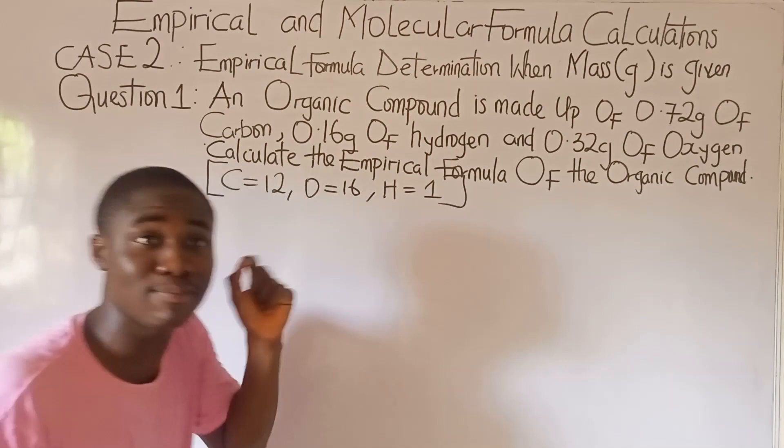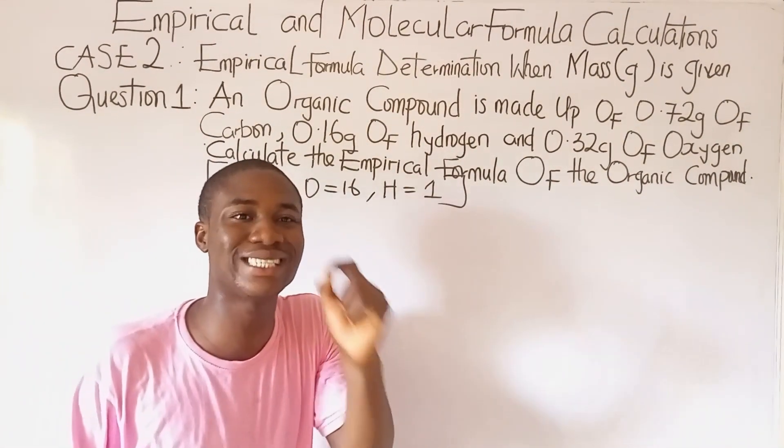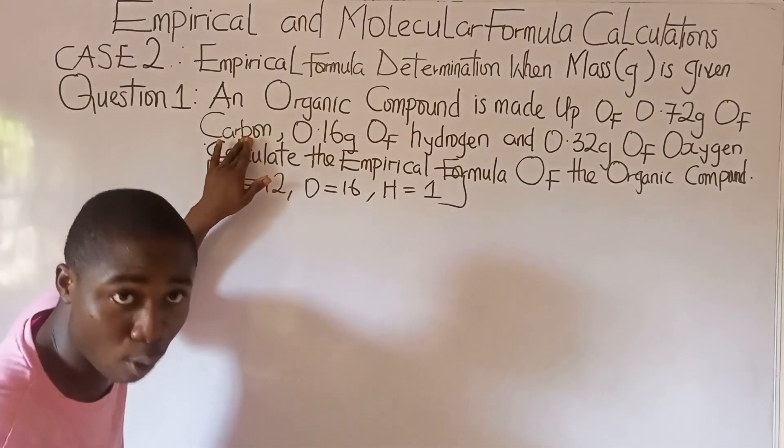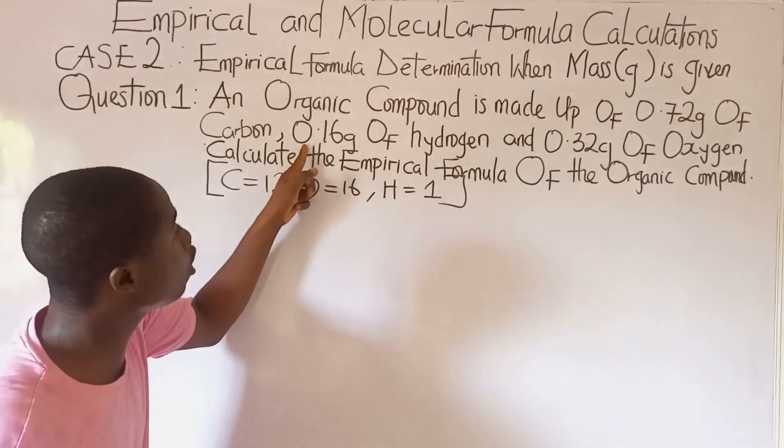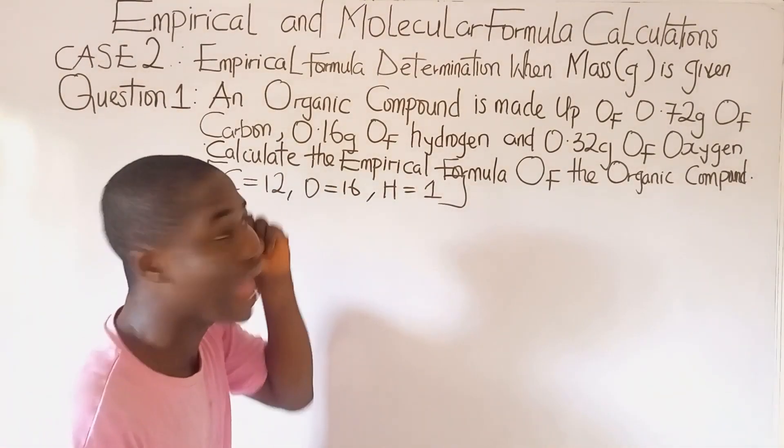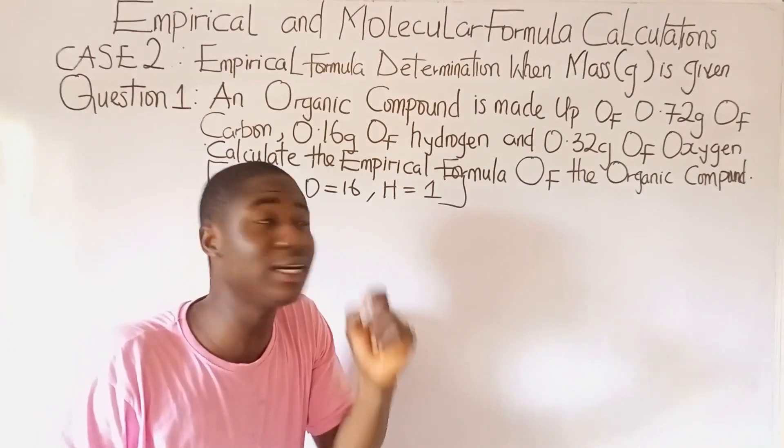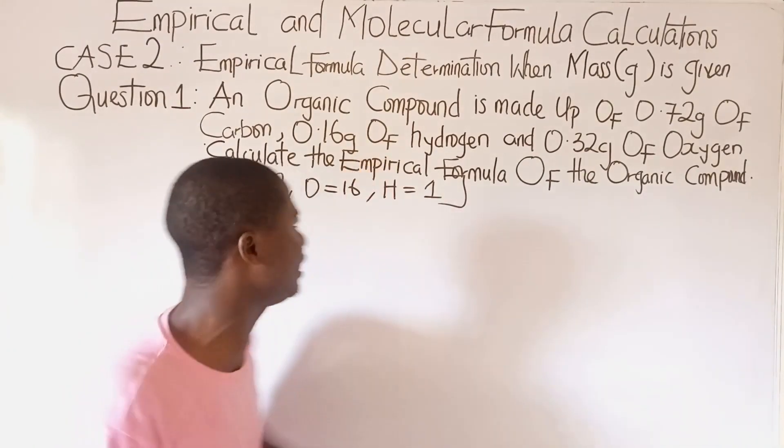An organic compound is made up of 0.72 grams of carbon and 0.16 grams of hydrogen and 0.32 grams of oxygen.